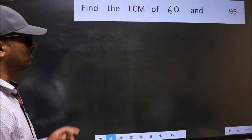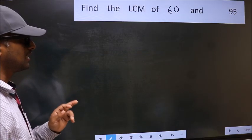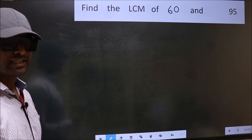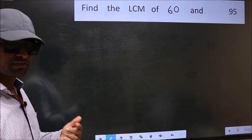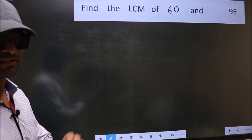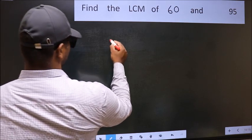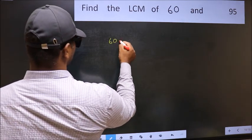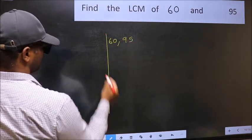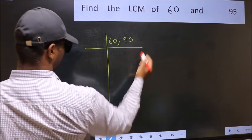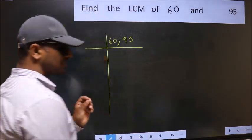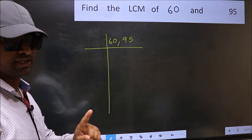Find the LCM of 60 and 95. To find the LCM, we should frame it in this way: 60, 95. This is step one.